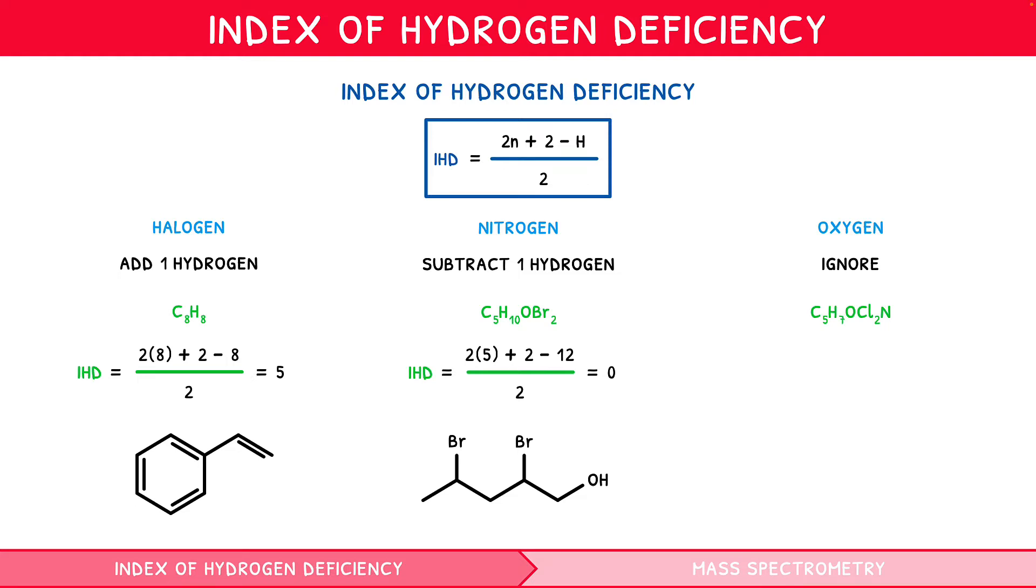Within C5H7OCl2N, there are 5 carbon and 7 hydrogen atoms. However, there are an additional 2 halogens and 1 nitrogen, and so we substitute in a value of N as 5 and H as 8. Simplifying, we would get an IHD of 2, signifying that the molecule has two double bonds or rings, or one of each. Thus, a possible structure would be as follows.